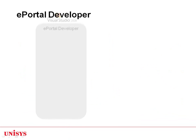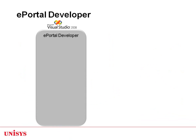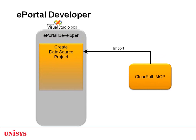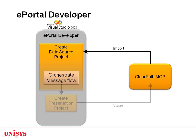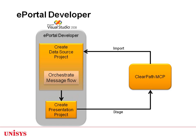Let's explore the ePortal Developer capabilities. There are three steps involved in any ClearPath MCP application modernization process. Step 1 is to create a data source project by capturing the interfaces of existing ClearPath MCP applications. Step 2 is to orchestrate the flow of data between the modernized application and the existing mainframe application. Step 3 is to create the presentation projects and stage them onto ClearPath MCP.